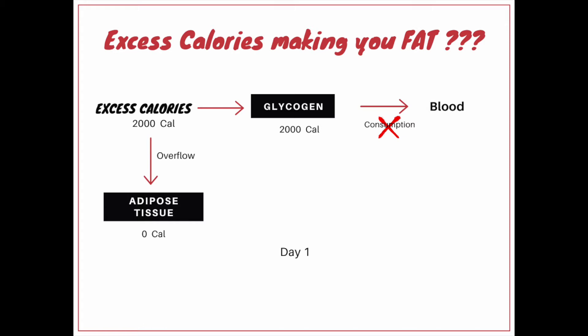On day one, that amount of excess calories will be deposited straight into glycogen. Since there is no extra utilization of energy because he is leading a sedentary life, there will be no outflow or consumption from the blood. Everything will remain in the glycogen, and there is no overflow of excess fat into adipose tissue. So the adipose tissue calorie is zero.